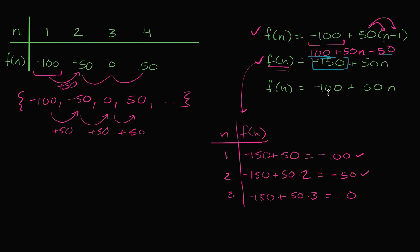What about f(n) = -100 + 50n? When n equals one, this gives negative 100 plus 50, which is negative 50. But we need negative 100 here. So this one is not correct.